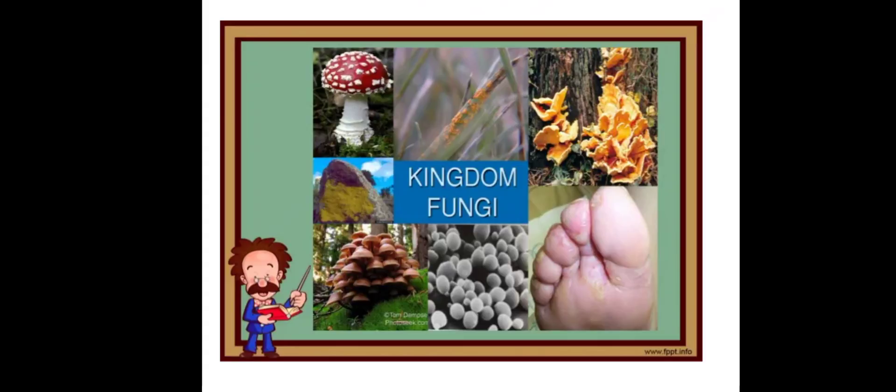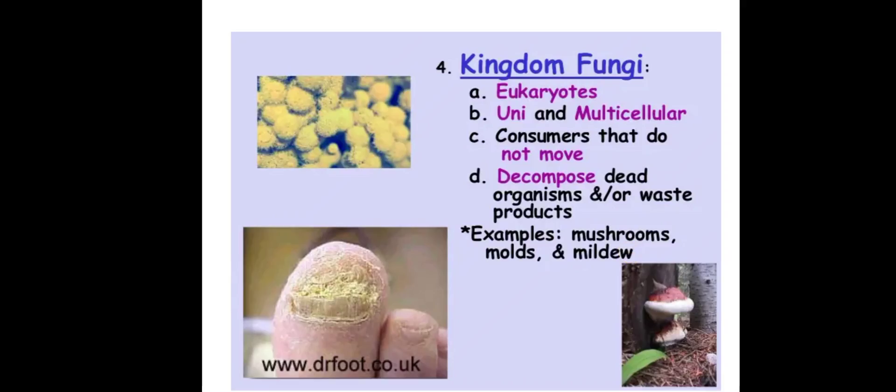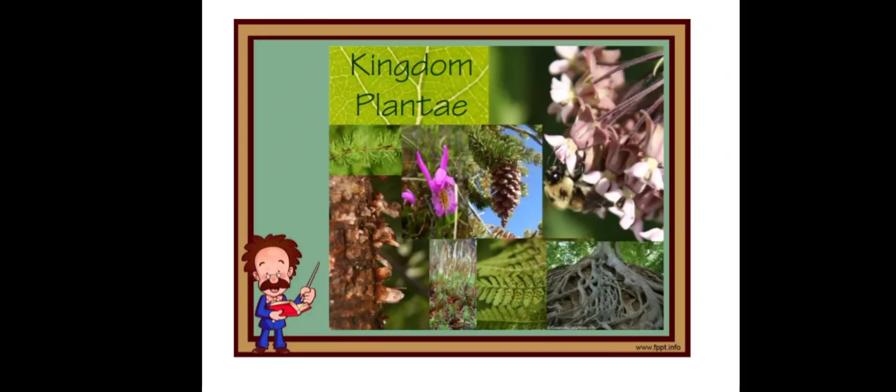Today we will be learning about Kingdom Fungi. Fungi are eukaryotes that can be unicellular or multicellular. They are consumers that do not move, and they decompose dead organisms or waste products. Examples include mushrooms, molds, and mold-like organisms. These organisms belong to Kingdom Fungi.